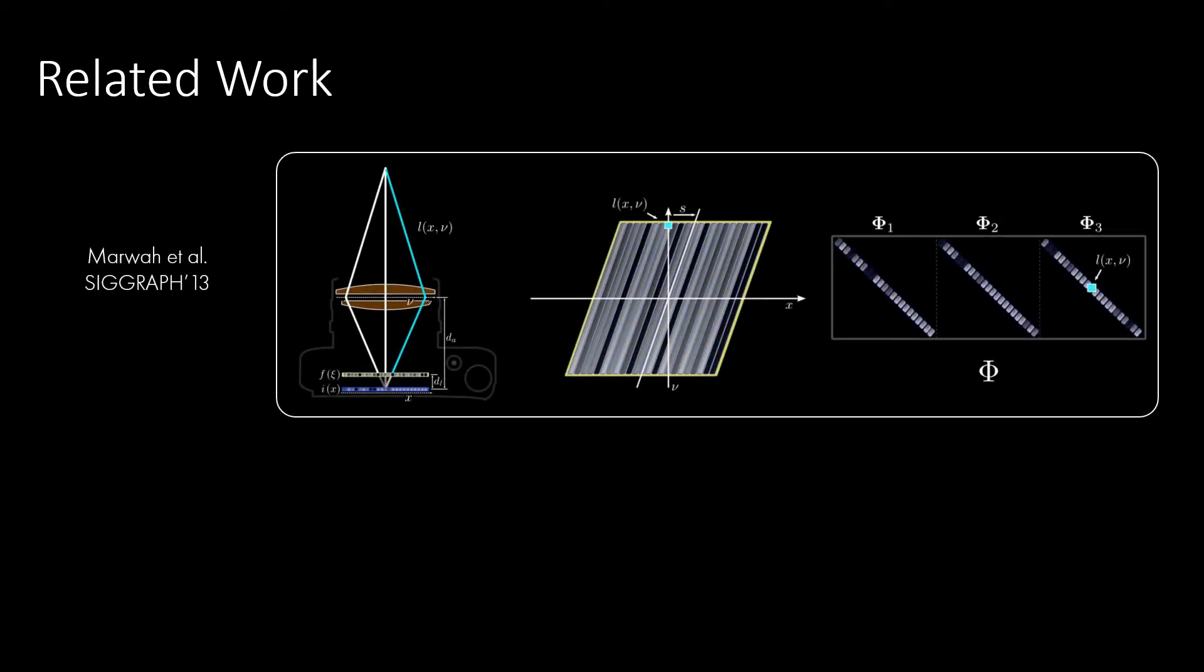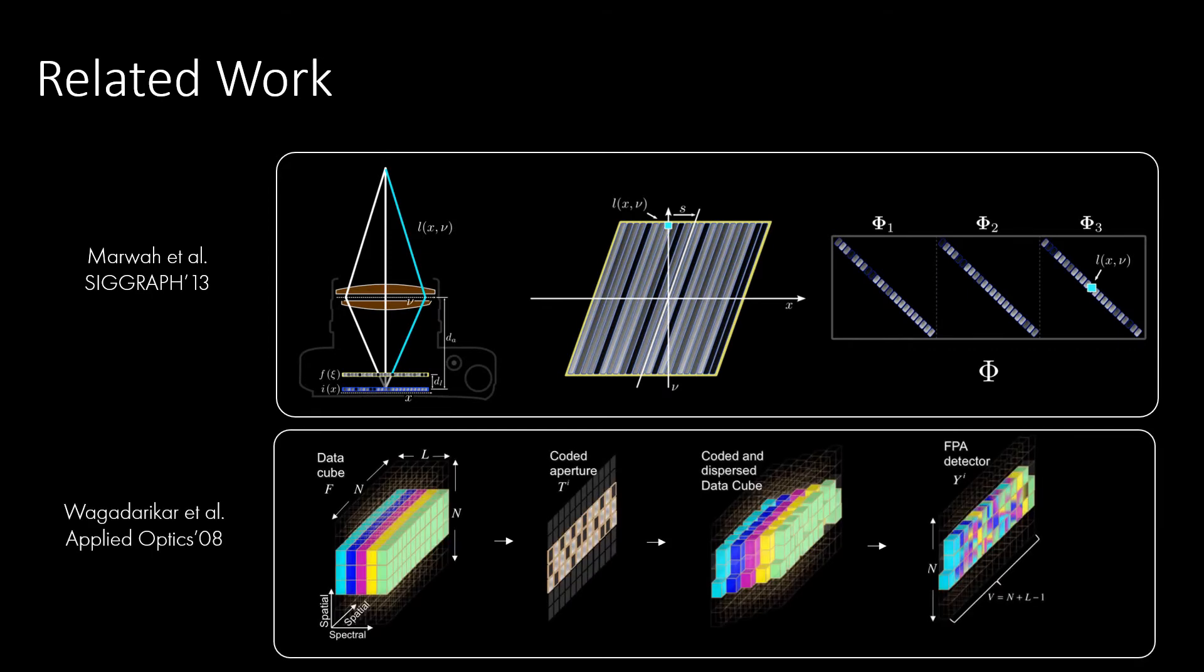Coded apertures have been used in a variety of computational imaging applications. For instance, to perform light field photography, such as in the work of Marwa et al., or hyperspectral imaging in the work of Vagadari-Kar et al. Here we build on those two works and show how coded apertures can be substantially improved in both those applications by adding another coding element, a coded exposure.